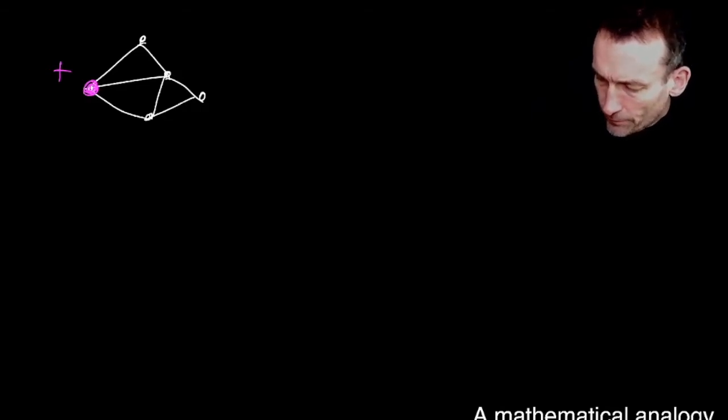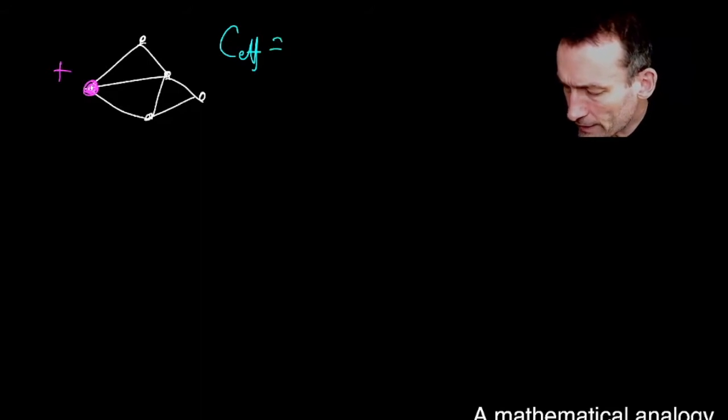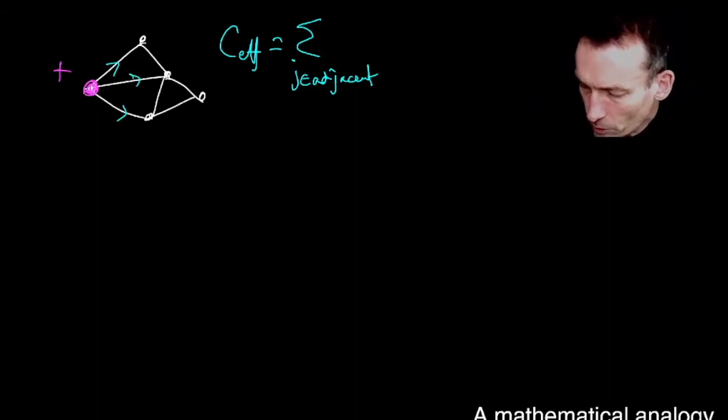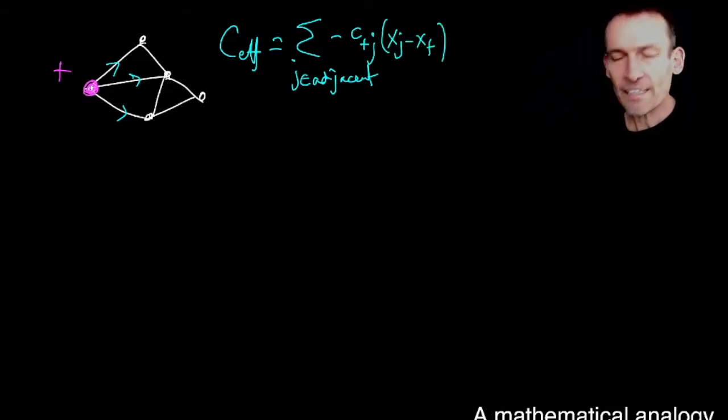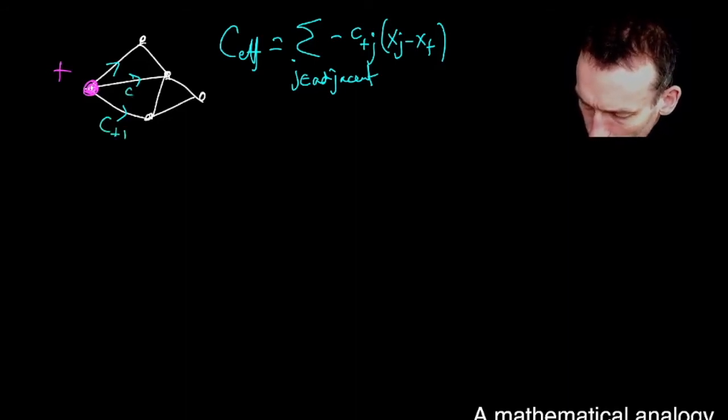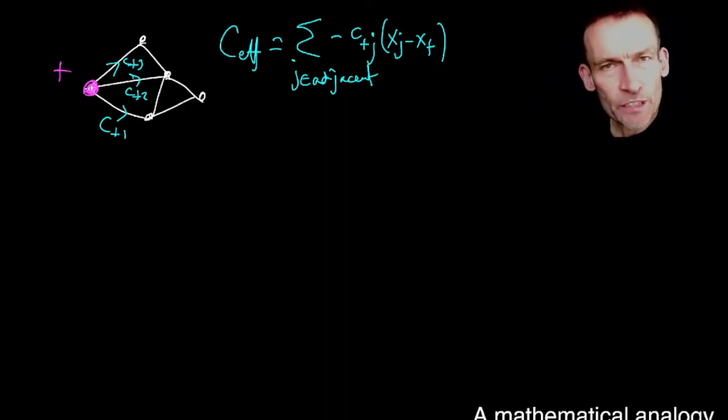Now, what did we define the effective conductance to be? It's the net divergence of currents from that node. So in this case, you can see, it's the sum of the j adjacent edges, and there's three in this particular drawing, of the currents through these things, which will, of course, be, if we label, if j is the label, then this will be minus the c plus j. So I'm using, instead of i, I'm using plus, because it's the plus node, times xj minus x plus. That's Ohm's law in each of the edges. So in this case, there would be three in that sum, three components of that sum. And c plus j would be the various, so this would be c plus one, this would be c plus two, c plus three, if I'd label those edges one, two, three. That was the definition of the effective conductance.